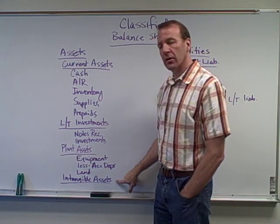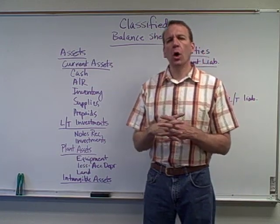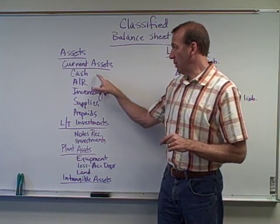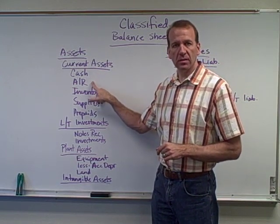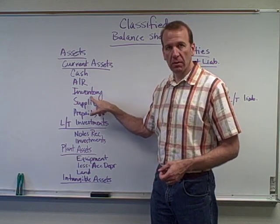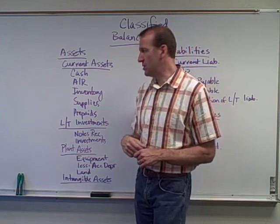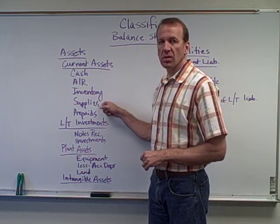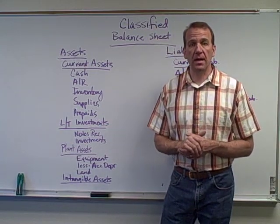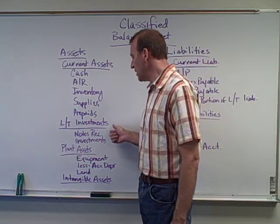Examples of current assets are those things that are cash or will be converted to cash or sold within the next year. That would include cash, accounts receivable — what people owe us and will pay within the year — inventory, which we're hopefully going to sell very soon, supplies we'll use up within the year, and prepaid expenses, which are typically current assets because we'll use them up within the year.